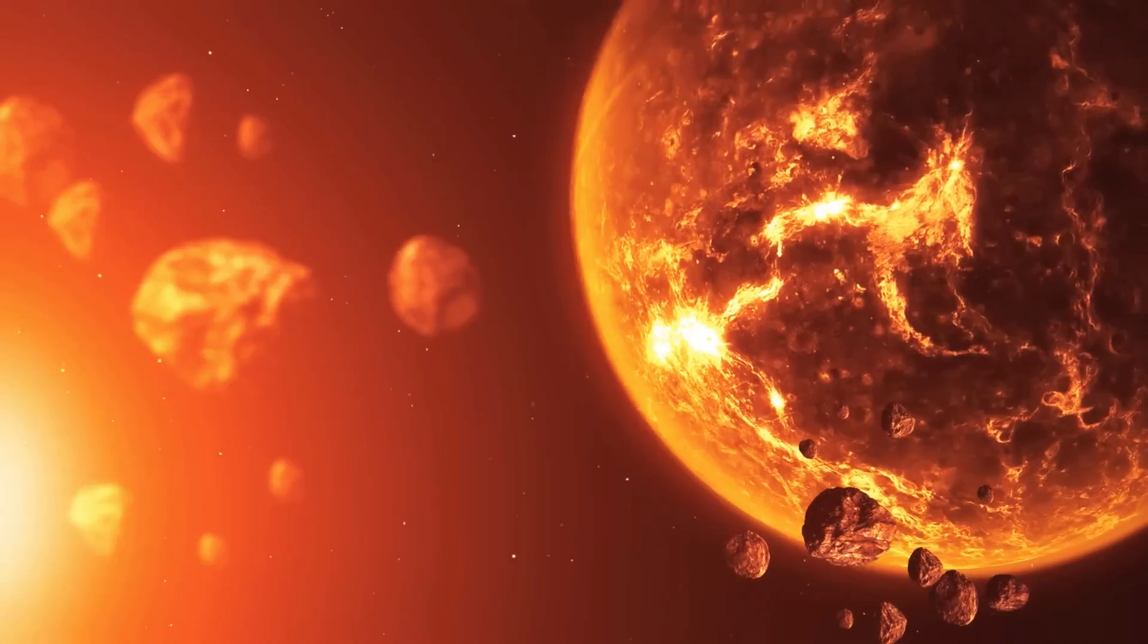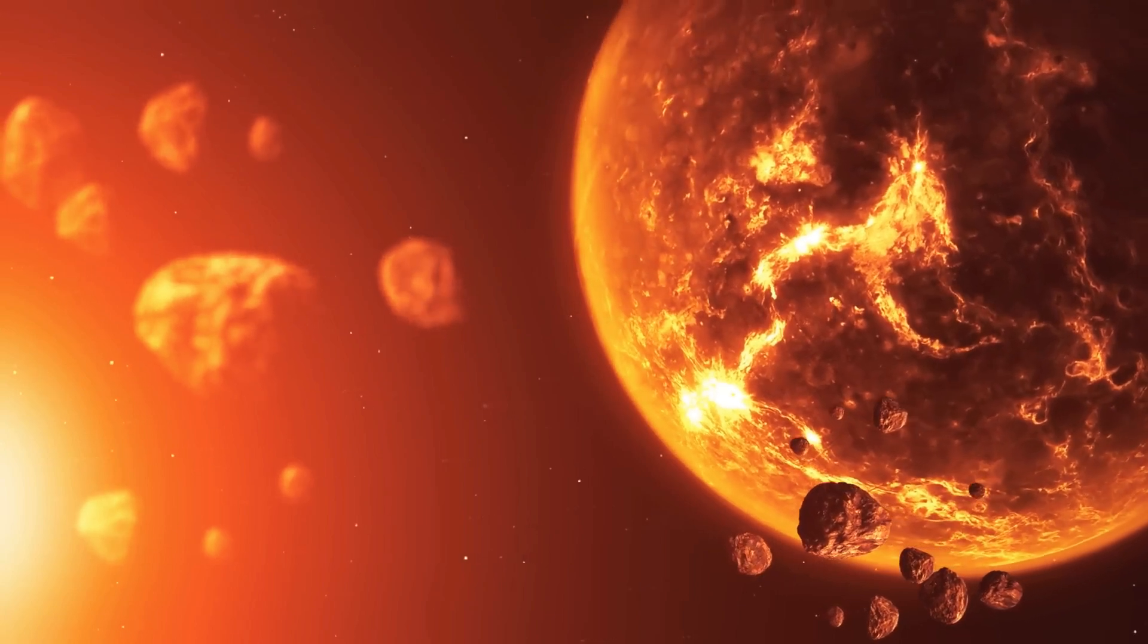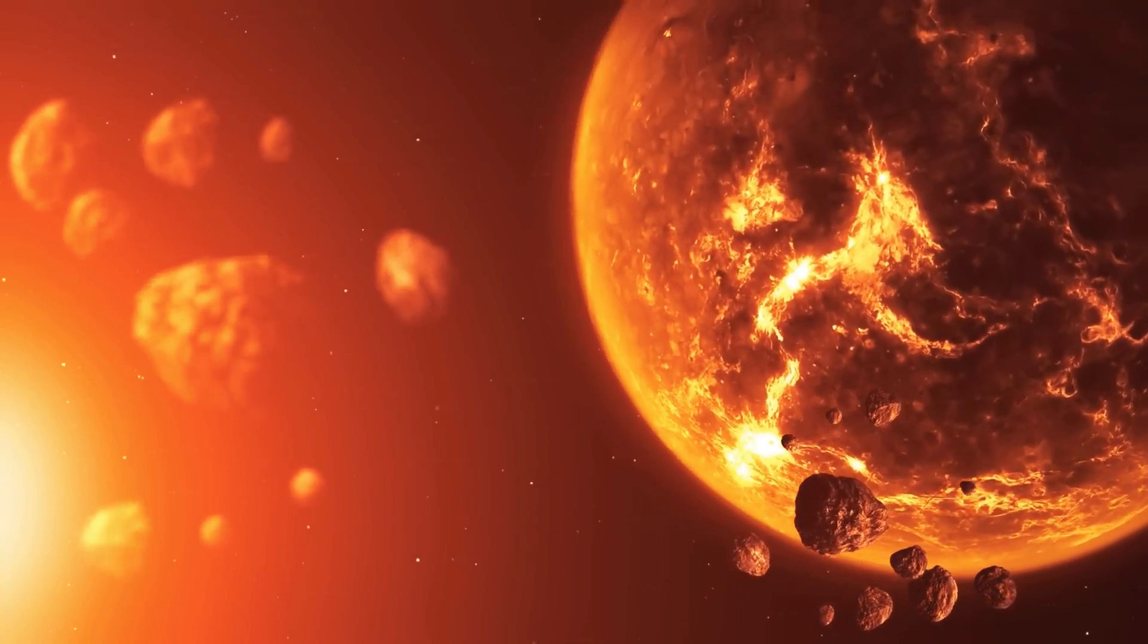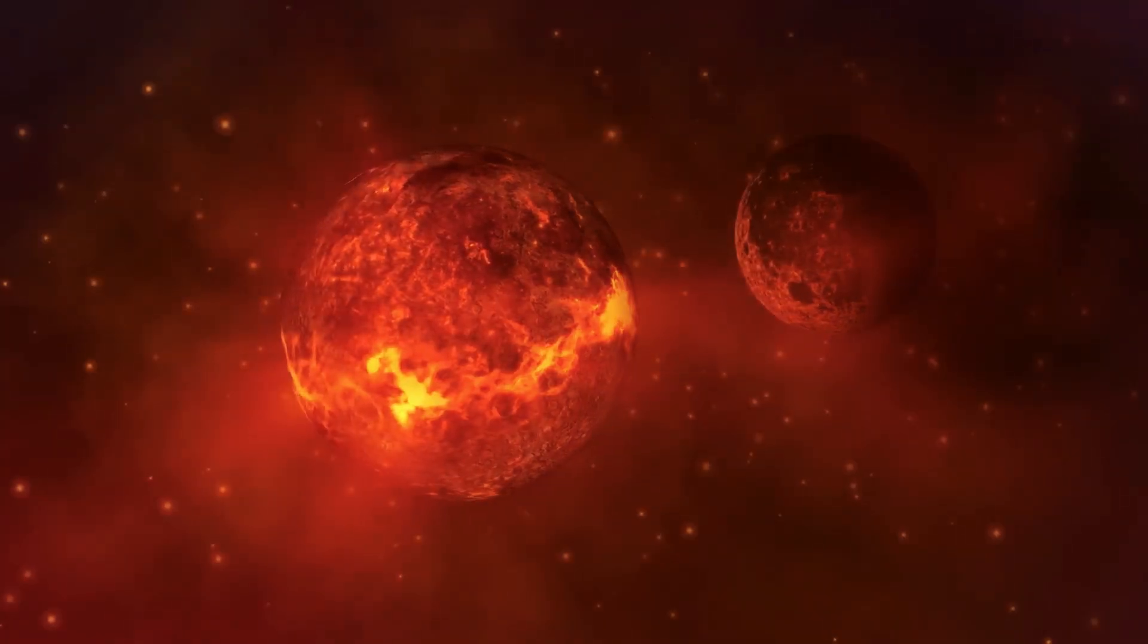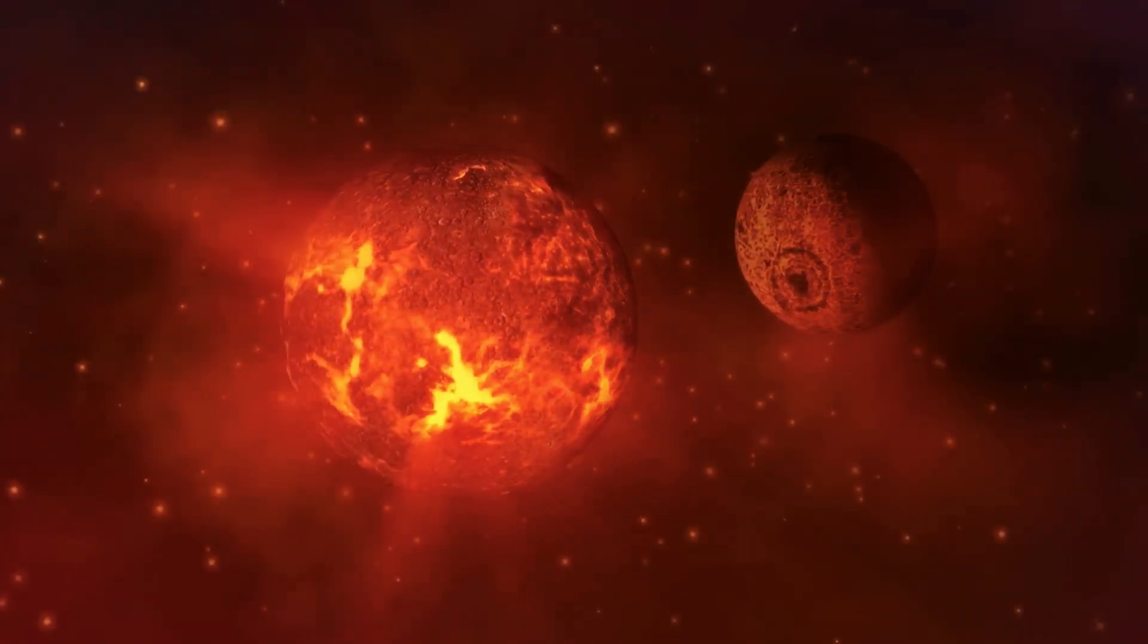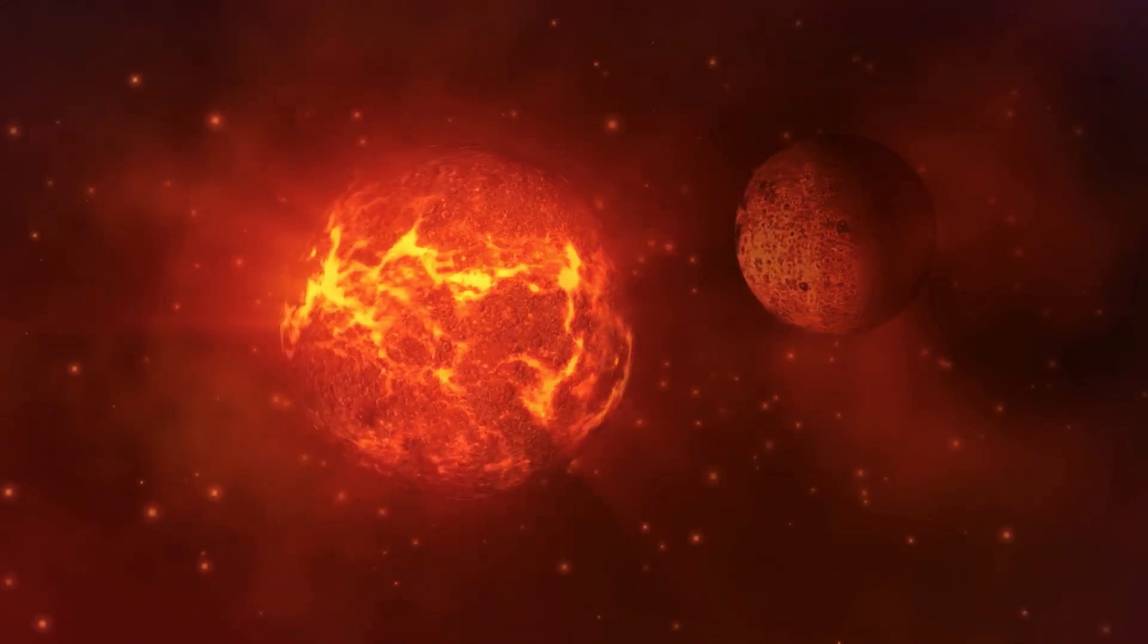Other exoplanet types identified by Kepler include super-Earths. They're more massive than Earth, yet lighter than ice giants like Neptune and Uranus, and can be made of gas, rock, or a combination of both.